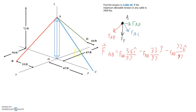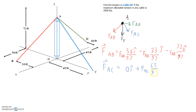We can do the same thing for the force in cable AC. Cable AC is 65 feet in the Y direction and 72 feet in the Z direction, making the length of cable AC also 97 feet. The force vector FAC has no X component, so the I component is zero, the J component is FAC × 65/97 j, and the K component is −FAC × 72/97 k.